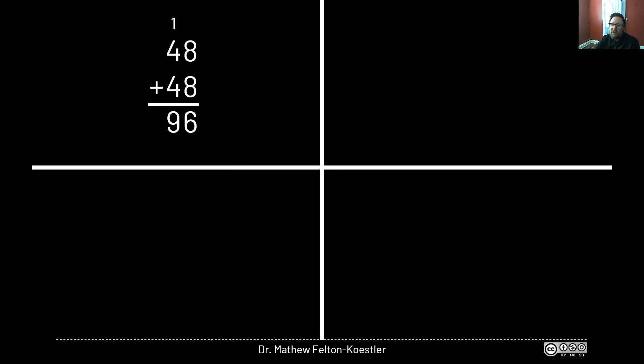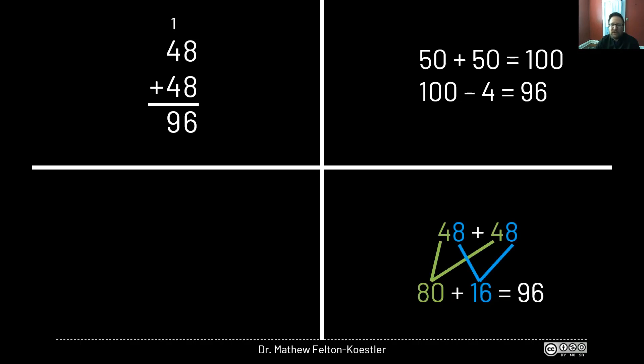You might have lined it up vertically and carried the one, but I bet some of you thought of it as 50 plus 50 and then subtracted 4 to get 96. Or maybe you thought that the two 40s make 80 and the two 8s make 16, and then you combine those to get 96.